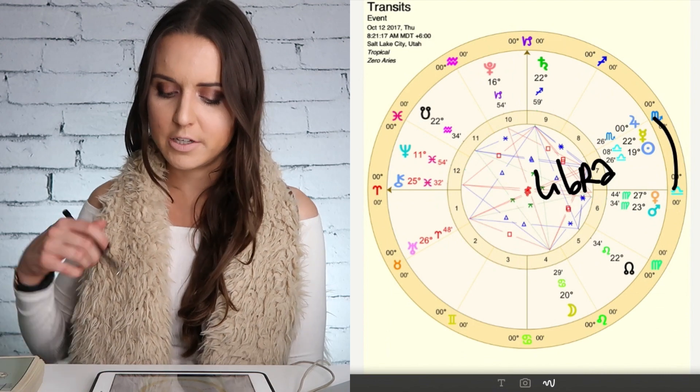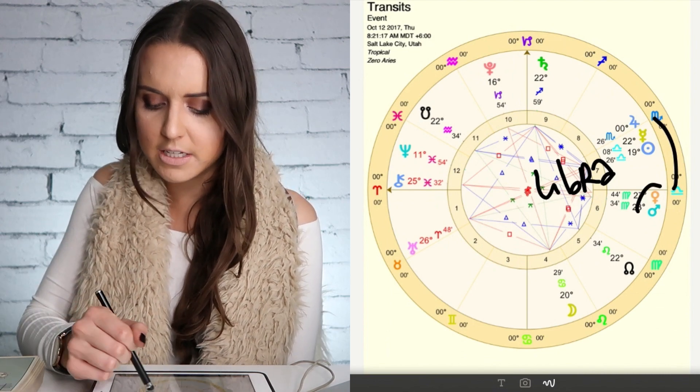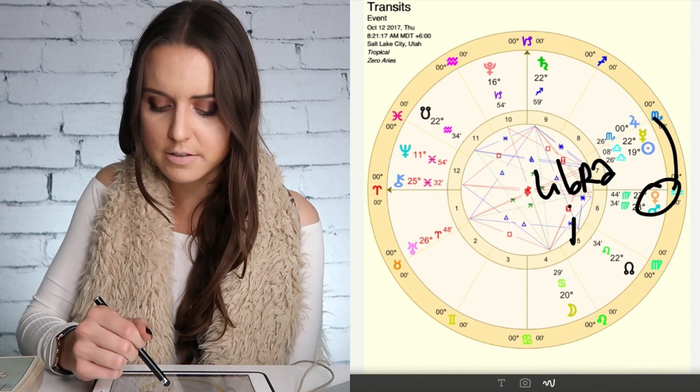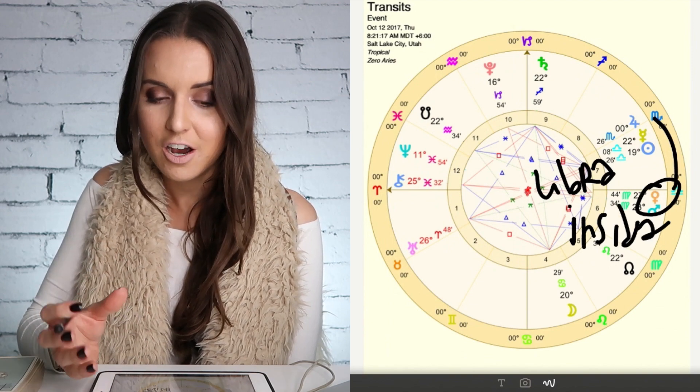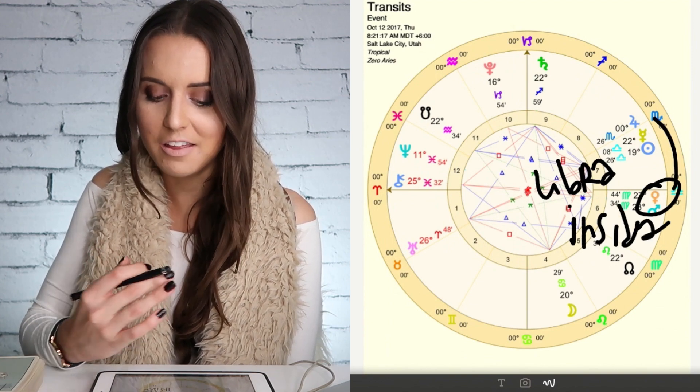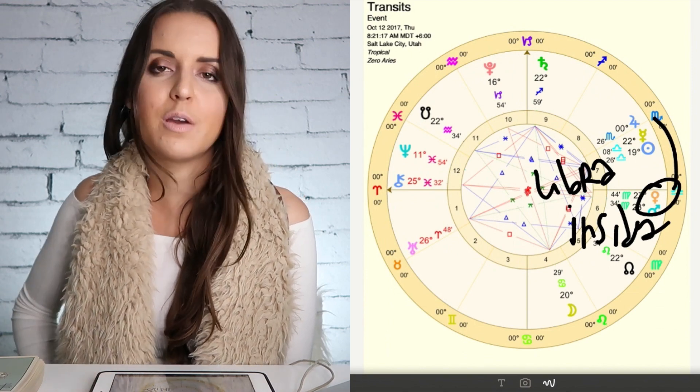Now what is going on this week Libra is we've got Mars and Venus conjunct right here in your 12th house of your insides, and of who you are on the inside, also of your past as well and things going on there.